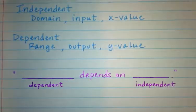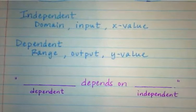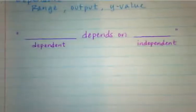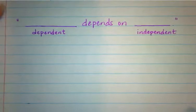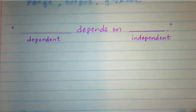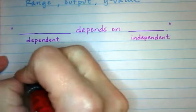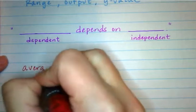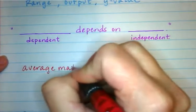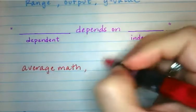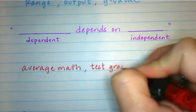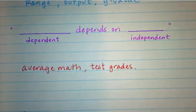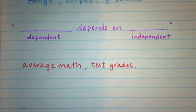Let's give you a few examples. So let's say that you wanted to compare your average in math and your test grades. So you might be asked to identify which one is the dependent and which one is the independent.